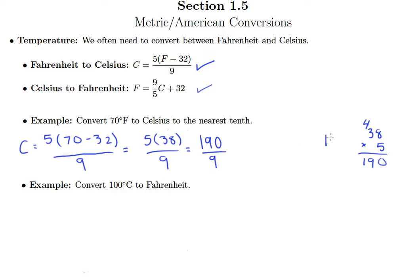Then finally we'll divide 190 by 9. So 9 goes into 19 twice. I get 18, remainder of 1, drop our 0. 9 goes into 10 once.